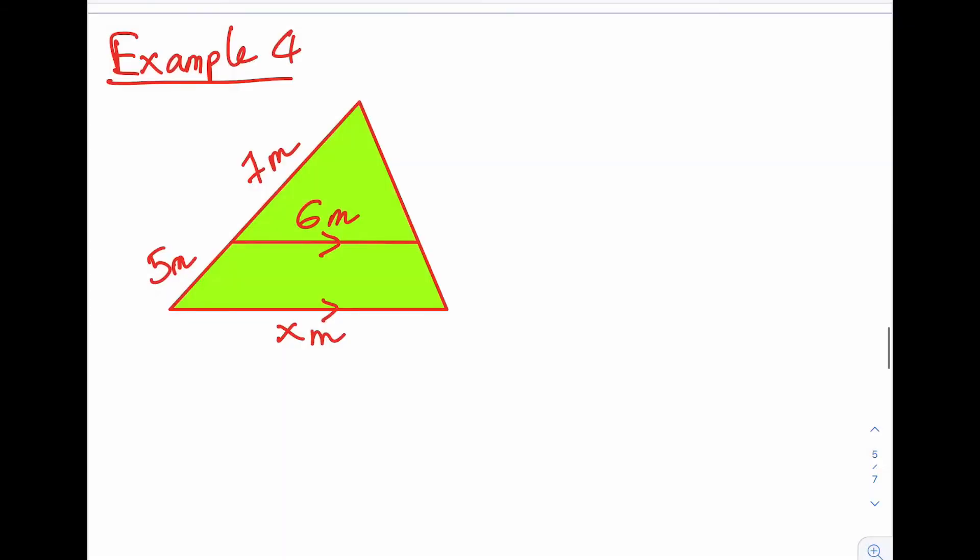Example 4. So we've got this sort of shape. And again, it's hard to see that this is a similar shape, but the clue is these parallel lines. Since they're parallel and you've got one big triangle and you'll have one small triangle,